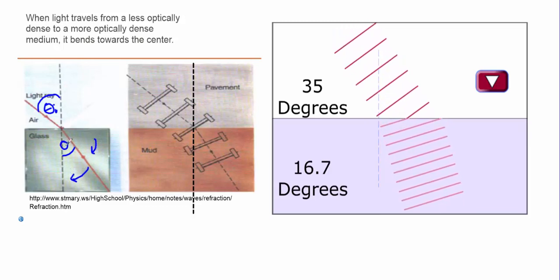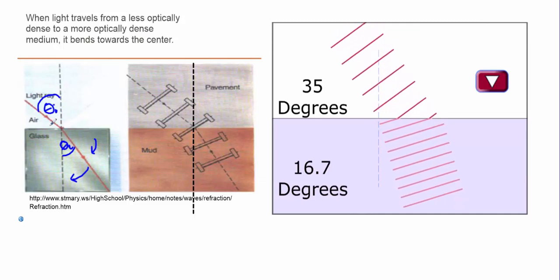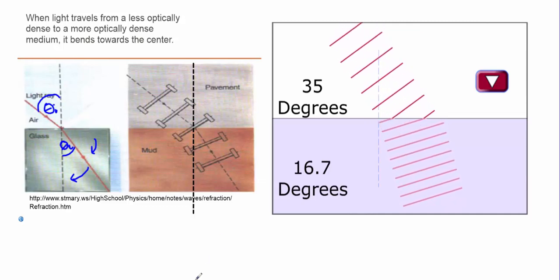And so therefore it bent towards the normal line. So theta 2, which is sometimes written as theta r, in this example is less than theta 1, which is often written as theta i, your incident angle.